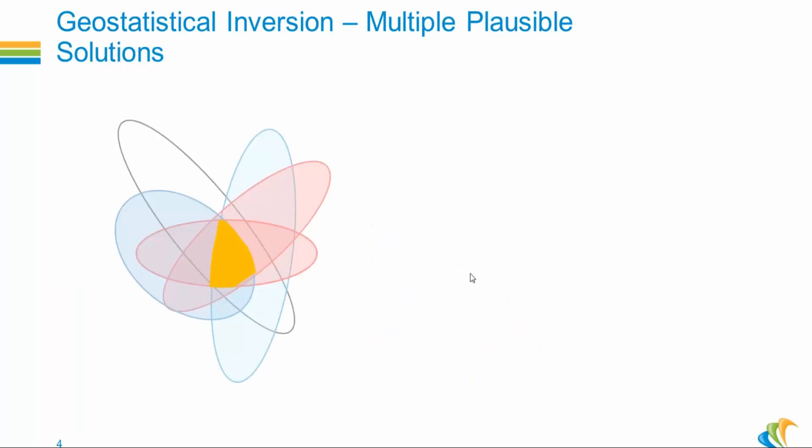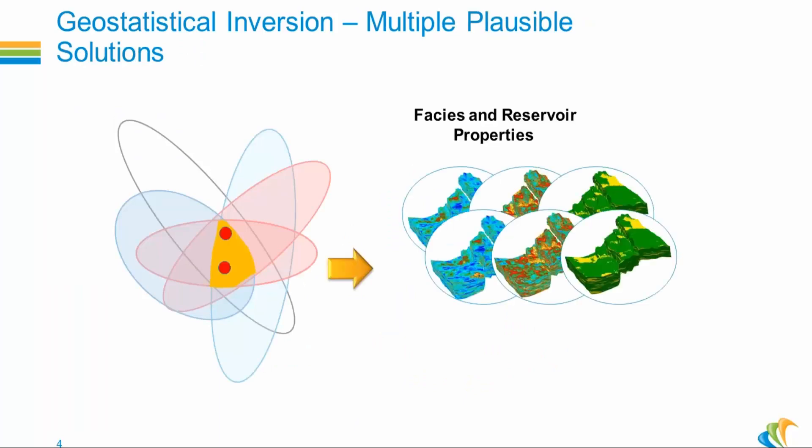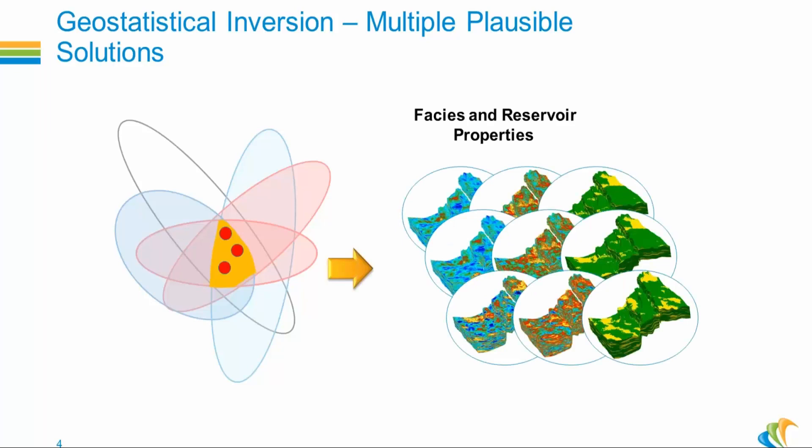The second advantage of geostatistical inversion is that by sampling multiple times the integrated solution space, you can generate multiple realizations and start getting an idea of the possible variations in your reservoir model. So I'm not going to dwell into details on how you sample the high dimensional and complex posterior distribution function. Several methods are available and are implemented differently in various products. Whatever the methods, the question remains the same after you have generated multiple realizations.